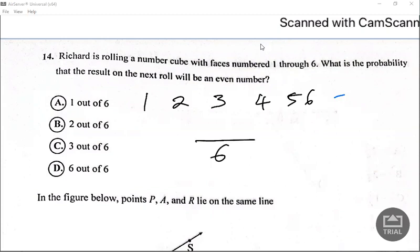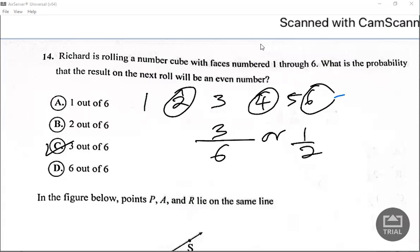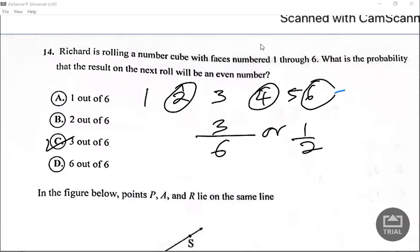Now let's look at how many even numbers that exist. So we have 2, 4, and 6. Remember we only consider even numbers that are on the cube. So that will be 3 out of 6 or a half. Now they did not break it down, so it's 3 out of 6.